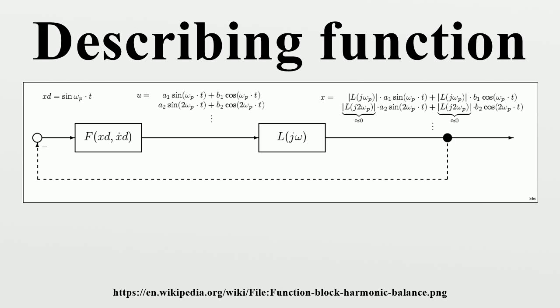In control systems theory, the describing function method, developed by Nikolai Mitrofanovich Krilov and Nikolai Bogolyubov in the 1930s,